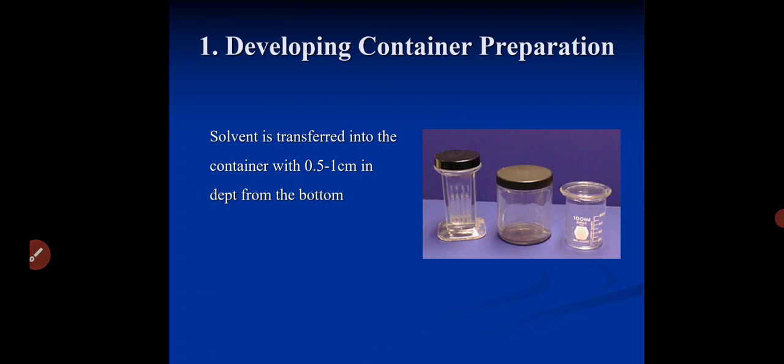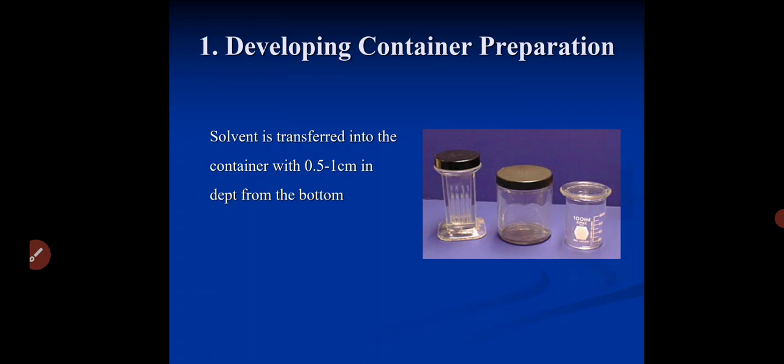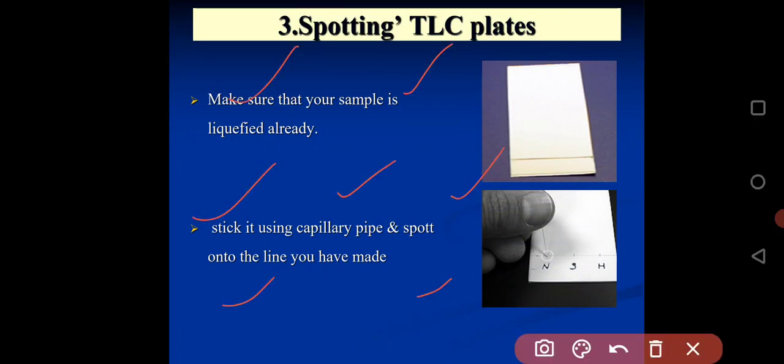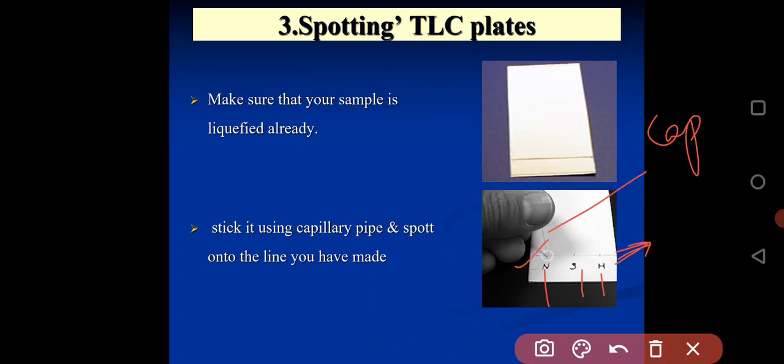Developing container preparation. Solvent is transferred into the container with 0.5 to 1 cm in depth from the bottom. TLC plate preparation: commercially obtained with 5 cm by 20 cm in size, prepare your size when necessary. Line 1 cm from the bottom with a pencil as a part should be spotted. Here you see that this is the baseline. Three types of sample, putting the sample by help of capillary. This is the baseline drawn by a sharp pointer, and this is the complete prepared TLC plate by the silica gel.